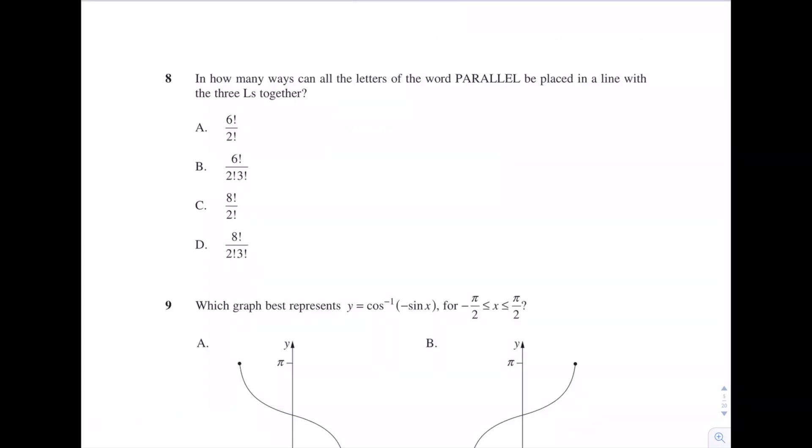Question 8. In how many ways can all the letters of the word parallel be placed in a line with the three L's together? So how many letters are there? There's 1, 2, 3, 4, 5, 6, 7, 8. There's 8 total letters. However, when we group the L's together, that would be considered as one sort of element. So let's count the number of elements here. We have P, which is 1, 2, 3, 4, 5, and then all the L's make one element. So altogether that would become 6.